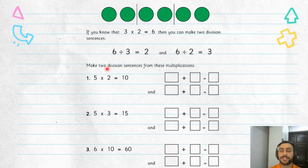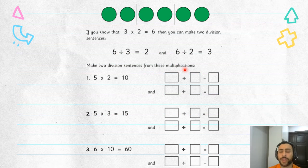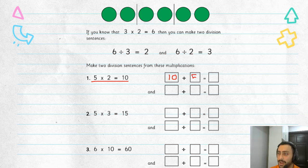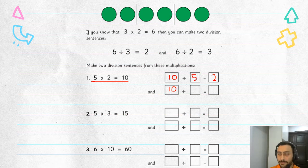So now let's do this one together — make two division sentences from these multiplications. First one: five times two equals ten. Ten divided by five equals two. And ten divided by two equals five.